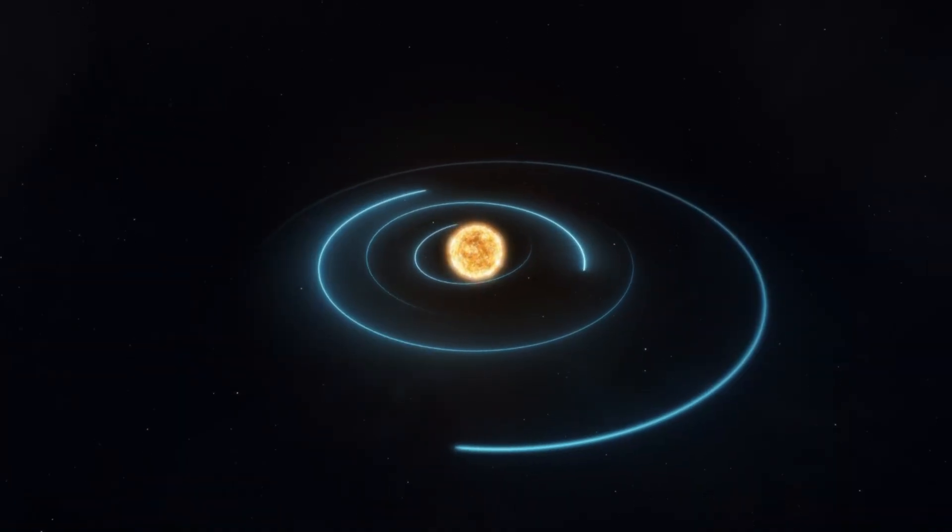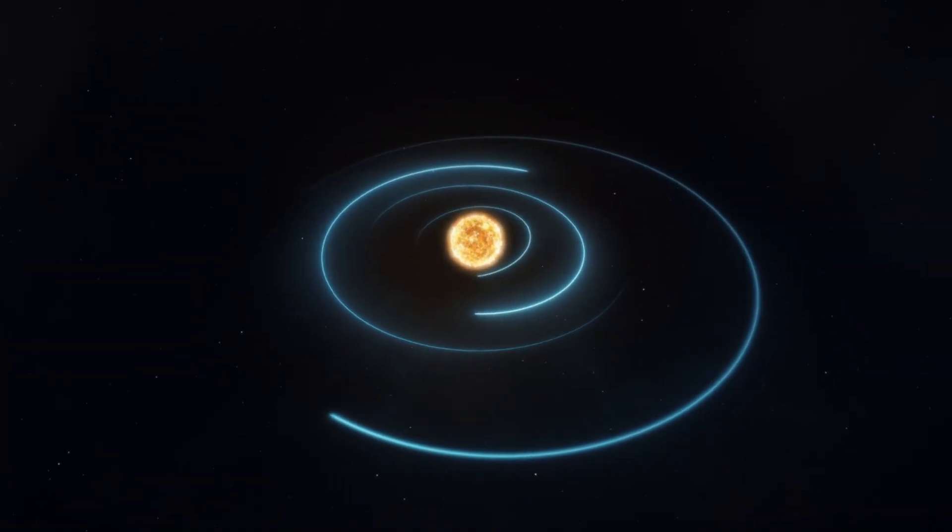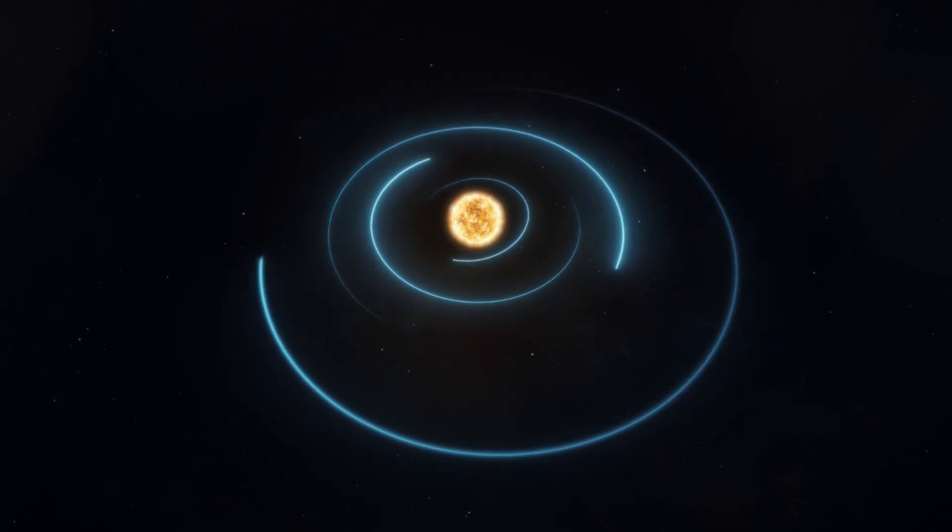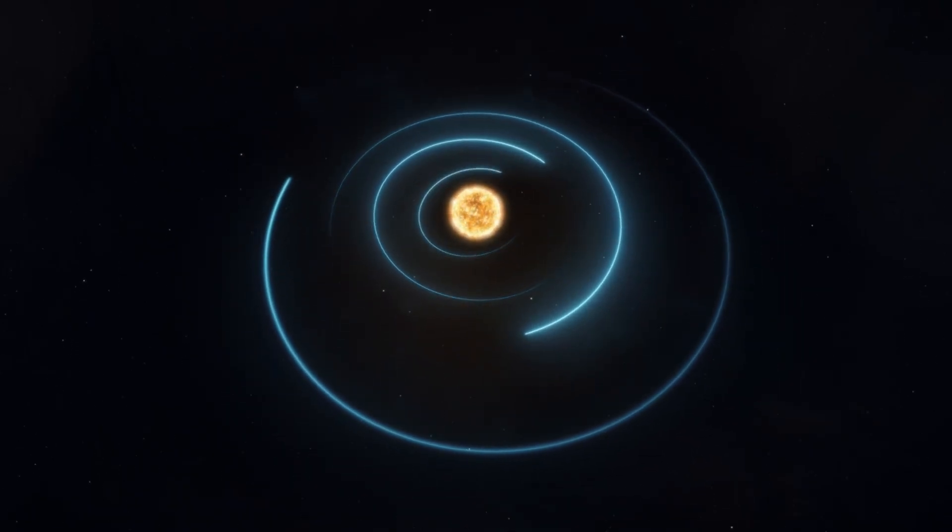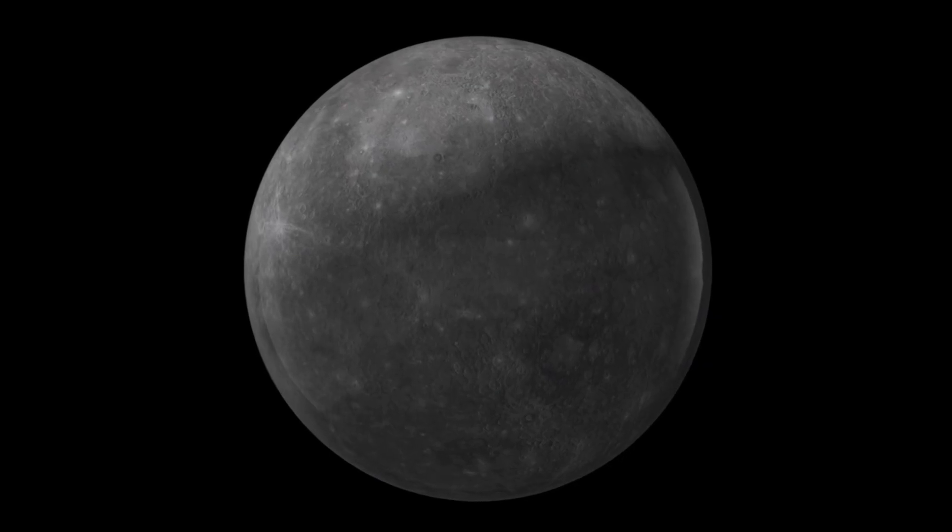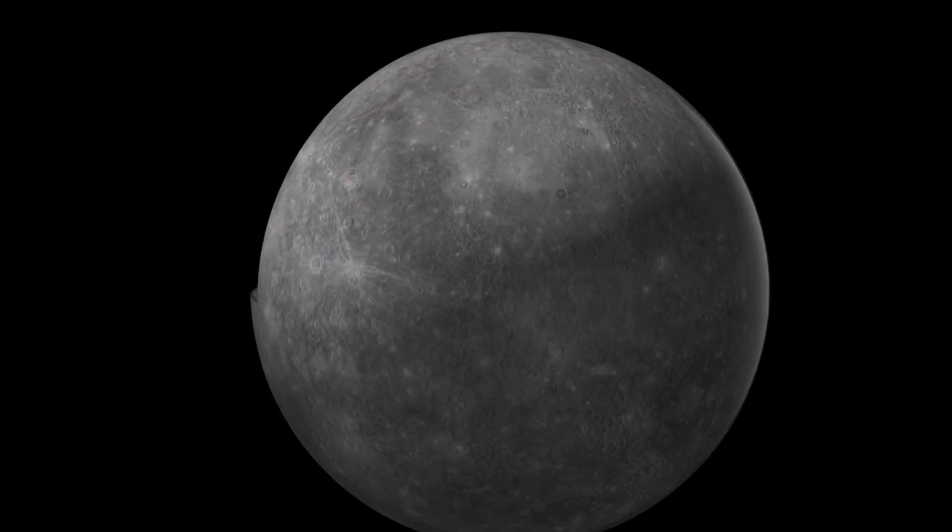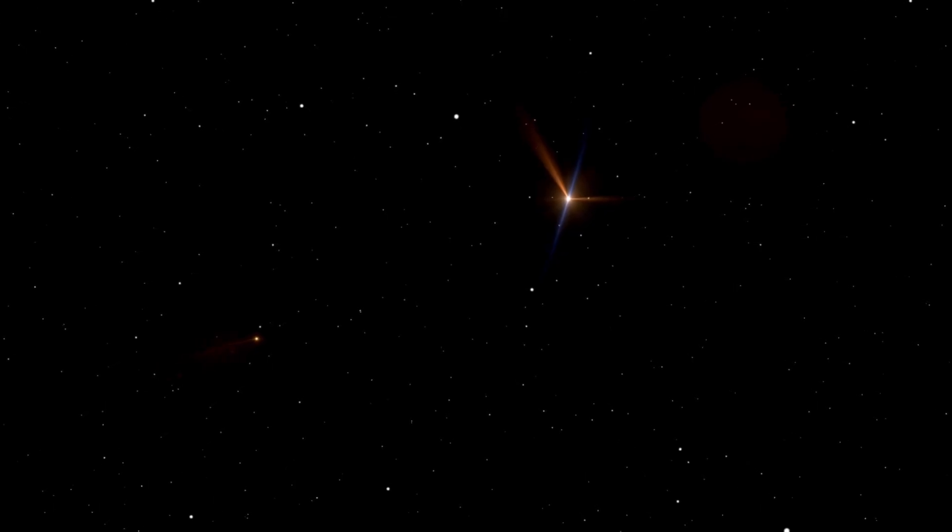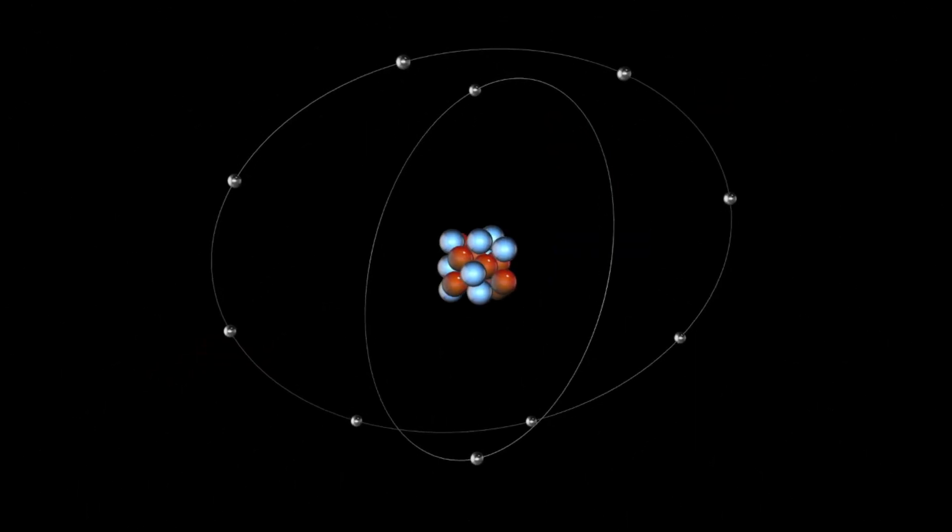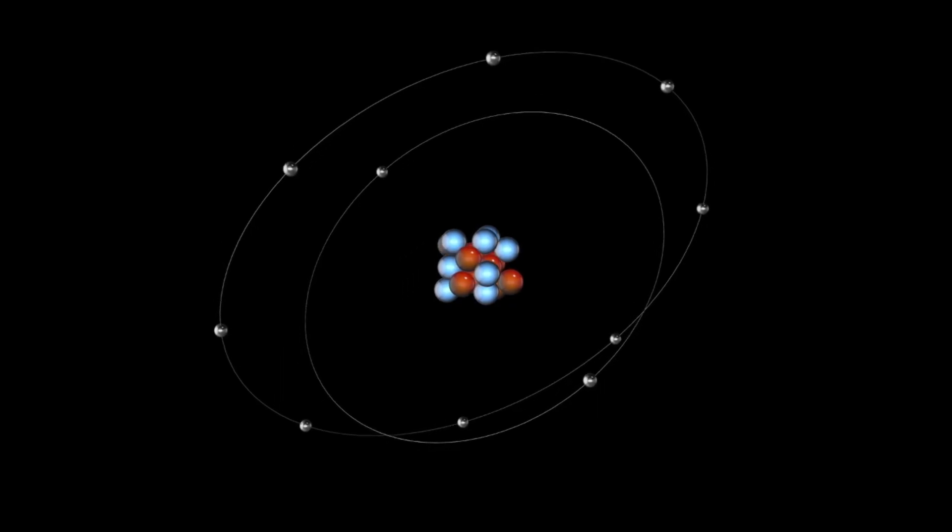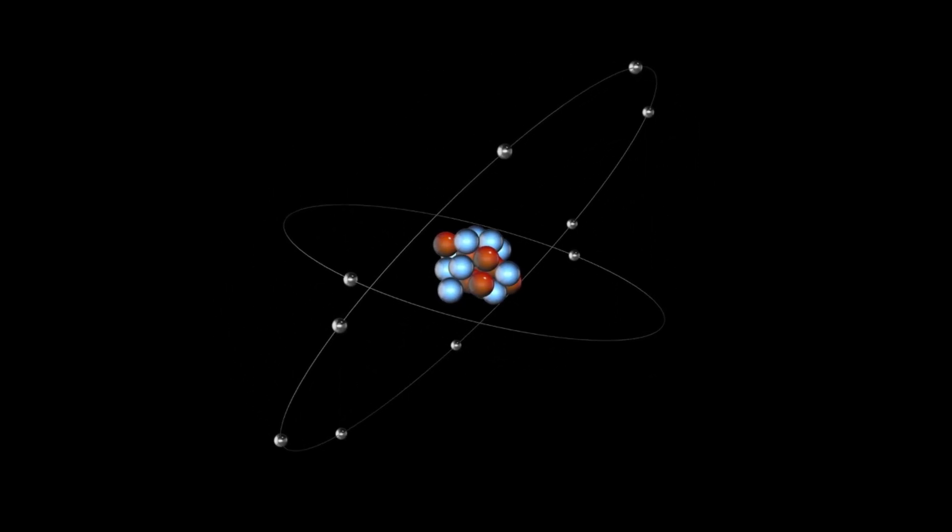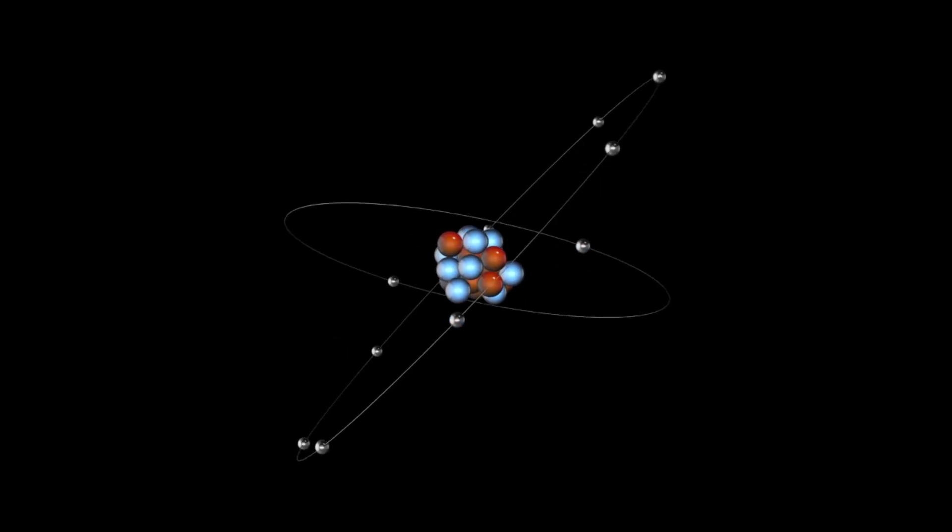Let's zoom out for a moment to consider the star that Proxima b orbits. Proxima Centauri is not just any star. It's the closest star to our own sun, part of the Alpha Centauri system, a trinary star system that has captured humanity's imagination for generations. While Alpha Centauri A and B are bright enough to see with the naked eye from the southern hemisphere, Proxima Centauri is far dimmer, a small, cool red dwarf invisible without a telescope.